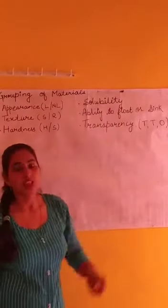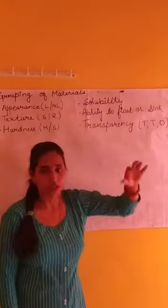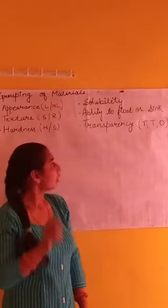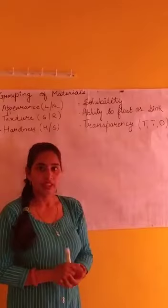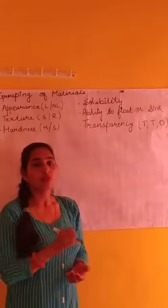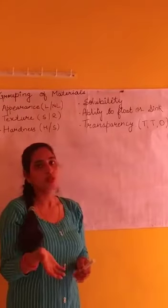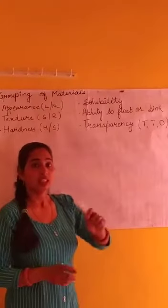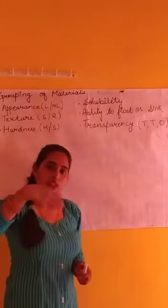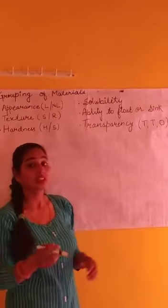The next property is solubility — solubility in water. If we dissolve something in water, it can be soluble. For example, if you put sugar in a glass of water, it will dissolve — that means it is soluble. But if I put a spoon of sand in a glass of water, the sand does not dissolve — that means it is insoluble.